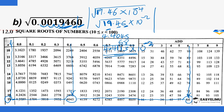You can leave the answer as 4.4113 times 10 to the power negative 2, or write it as an ordinary number. Since the power is negative 2, move the decimal point two steps to the left, giving 0.044113 as the square root of the original number.